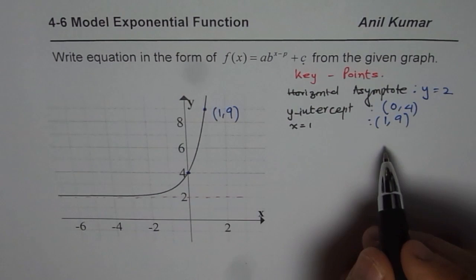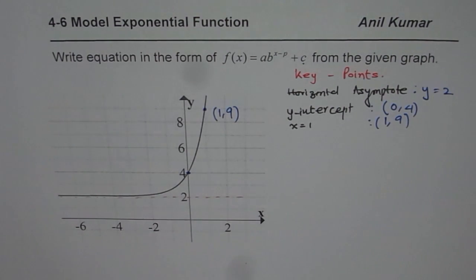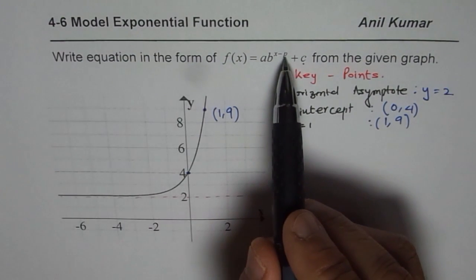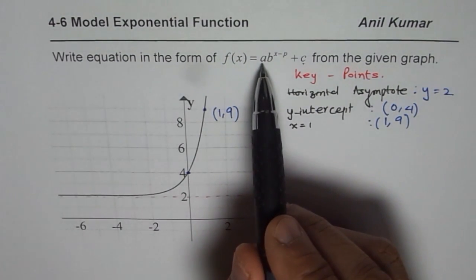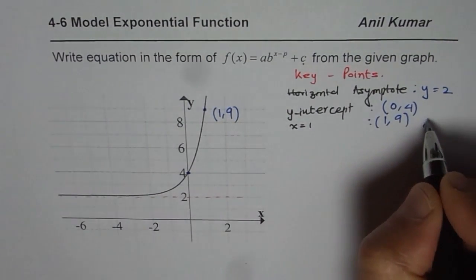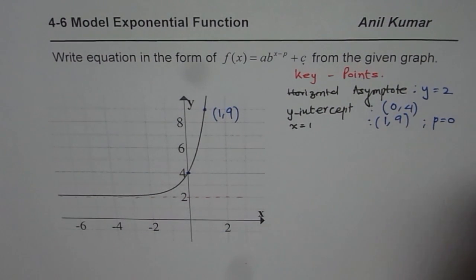These will help us to find the equation of this transformed function. So let us assume that there is no horizontal stretch or compression and we will consider everything as a vertical stretch or compression. So our assumption here is that p = 0.